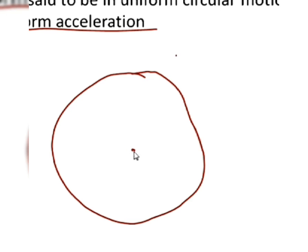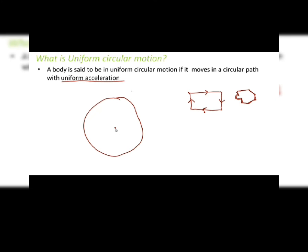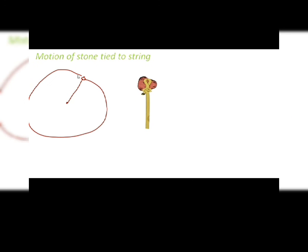So such a body is said to be in uniform circular motion. Let's take a small example of such motion. Suppose you take a stone, tie it to a string, and start rotating it. What happens? This stone moves in a circular path. As soon as you release the stone, it will be thrown away in a particular direction.